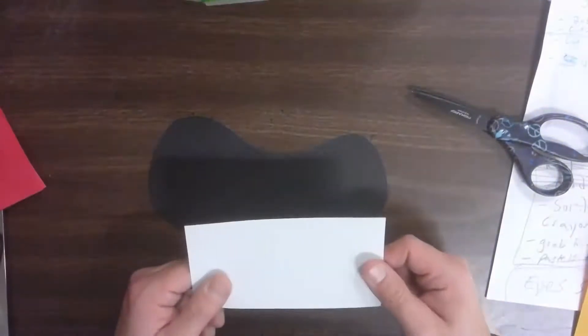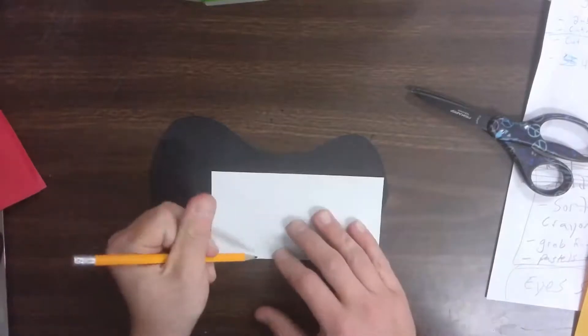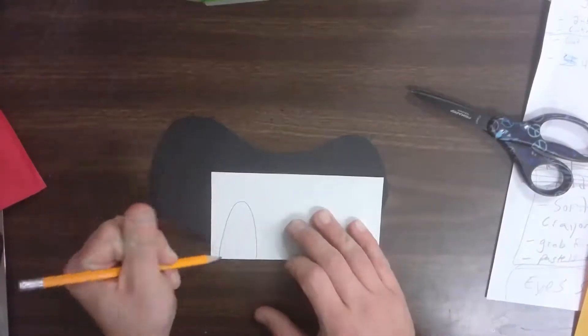Now my next step is to think about what kind of teeth I want. We're going to use these white pieces for teeth. If it helps you, you could draw them on there first. Maybe some are bigger, maybe some will be kind of small.